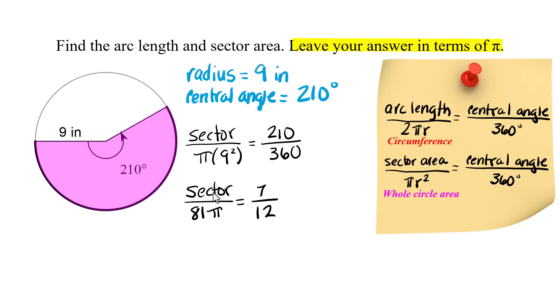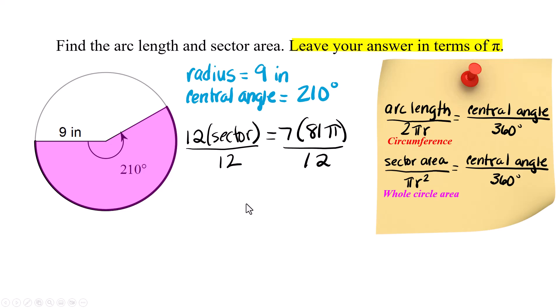I just wanted to be super clear today because I was going after two different things. So I just put sector. So 12 times the sector area is equal to 7 times 81π. Get some room and now we're going to divide both sides by 12 and we end up with 567. That's 7 times 81 over 12.